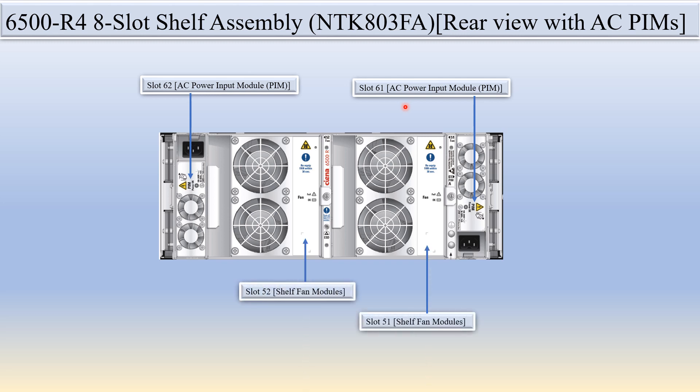Slots 51 and 52 are the fan modules. This shelf assembly is designed for data center cabinets. This covers the Ciena 6500 R4 eight-slot shelf assembly — the rear view with AC and DC power inputs and the front view.